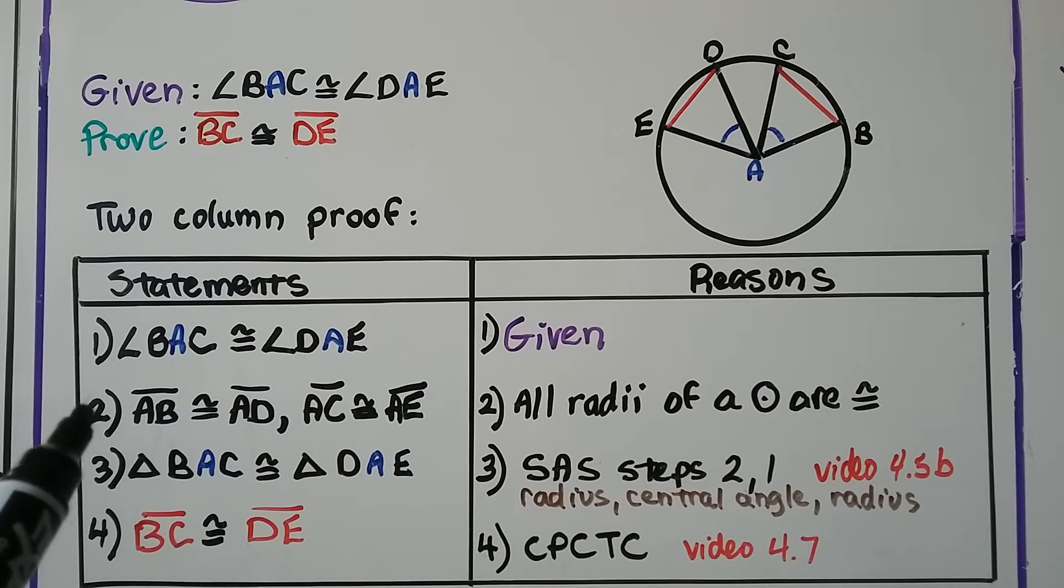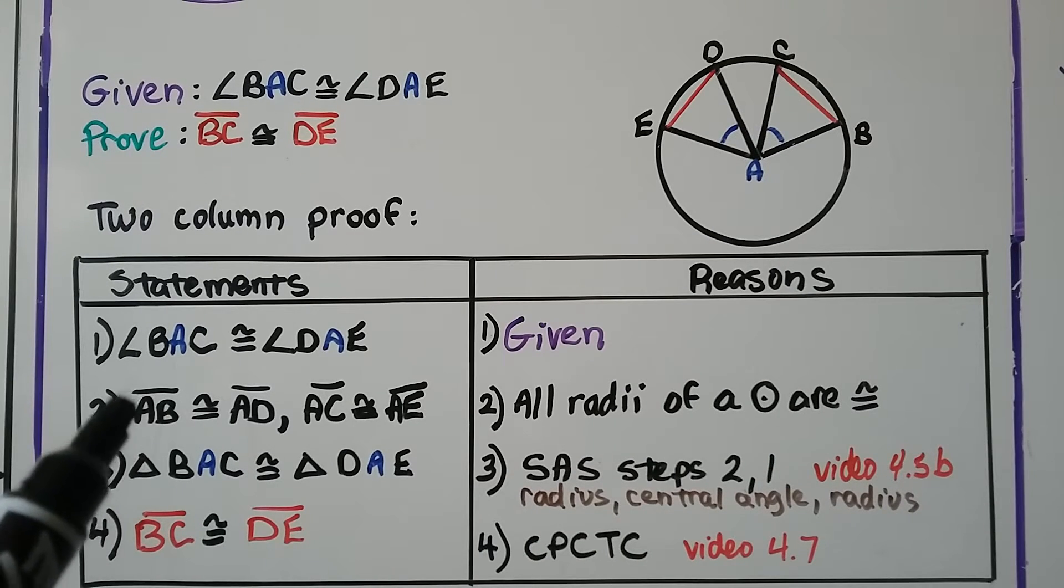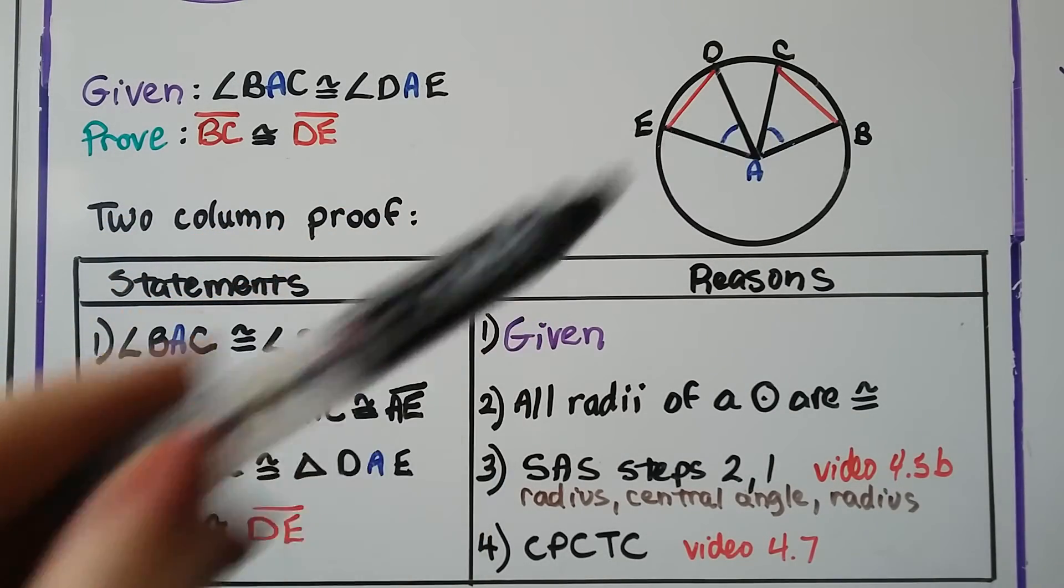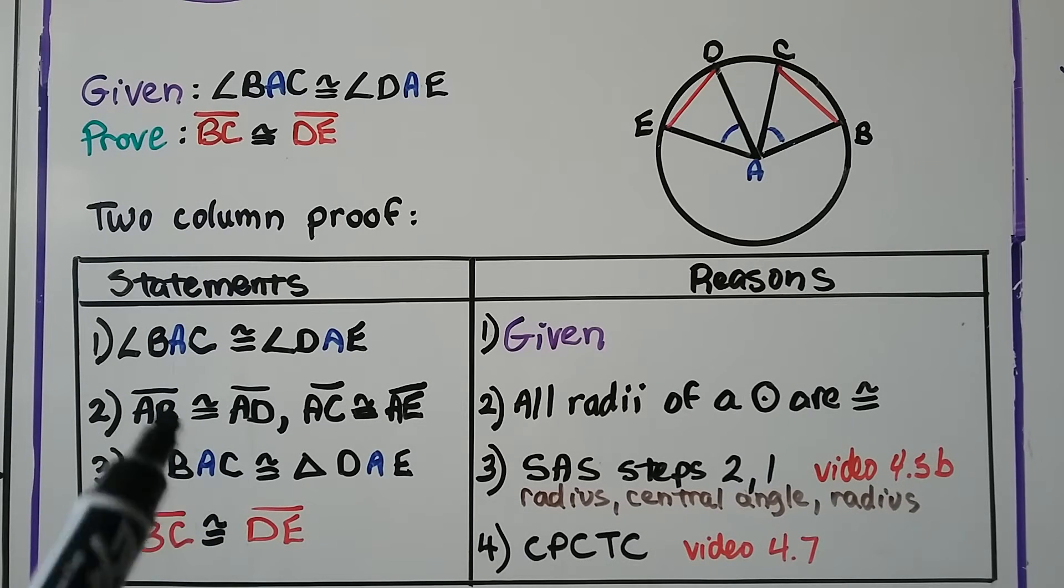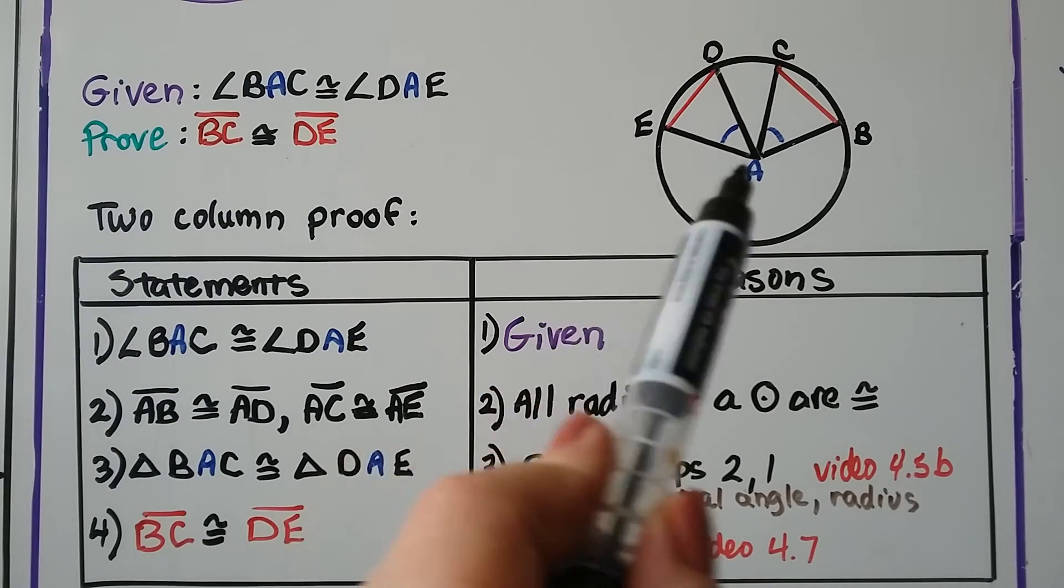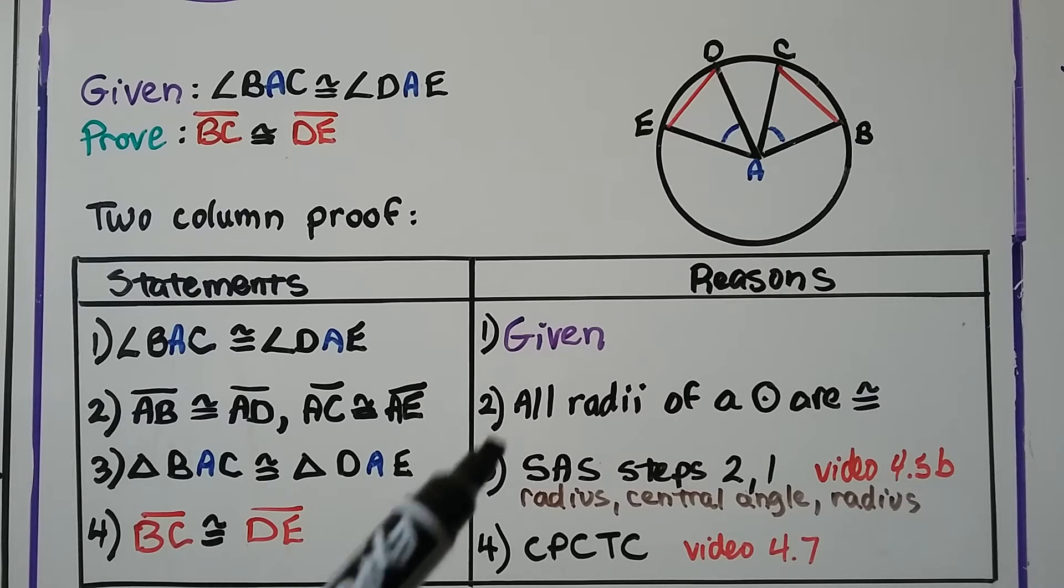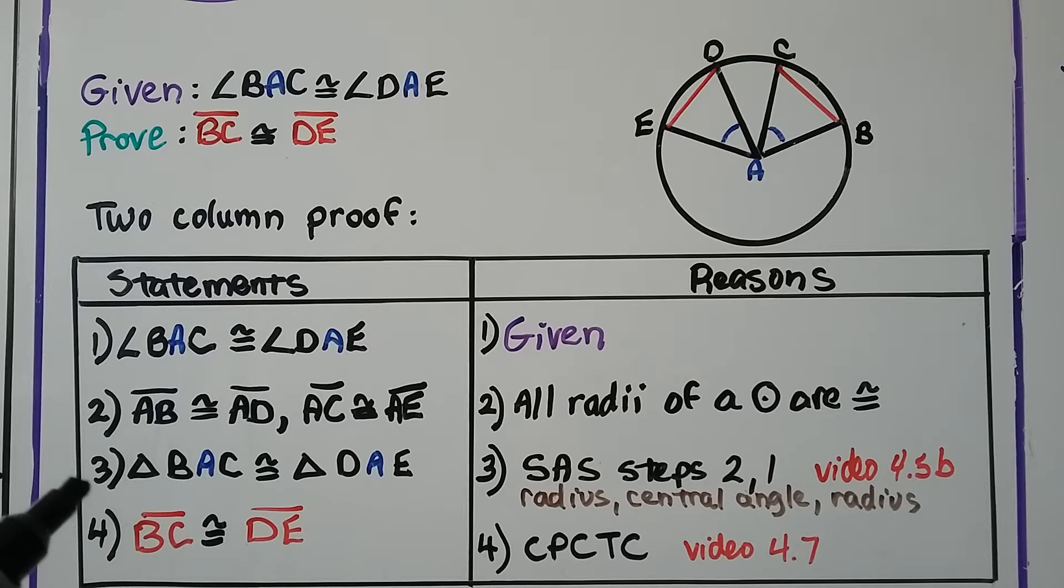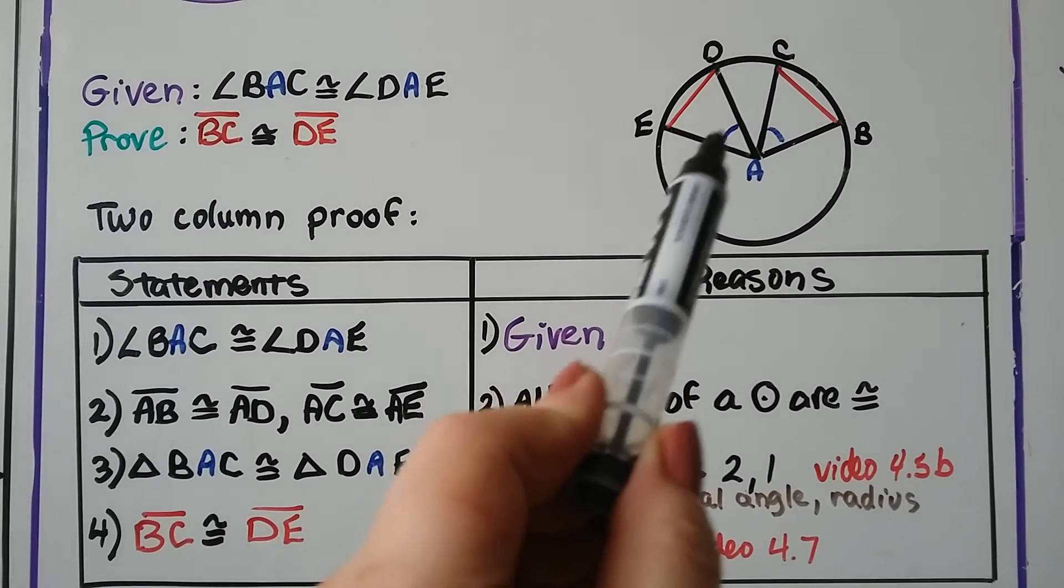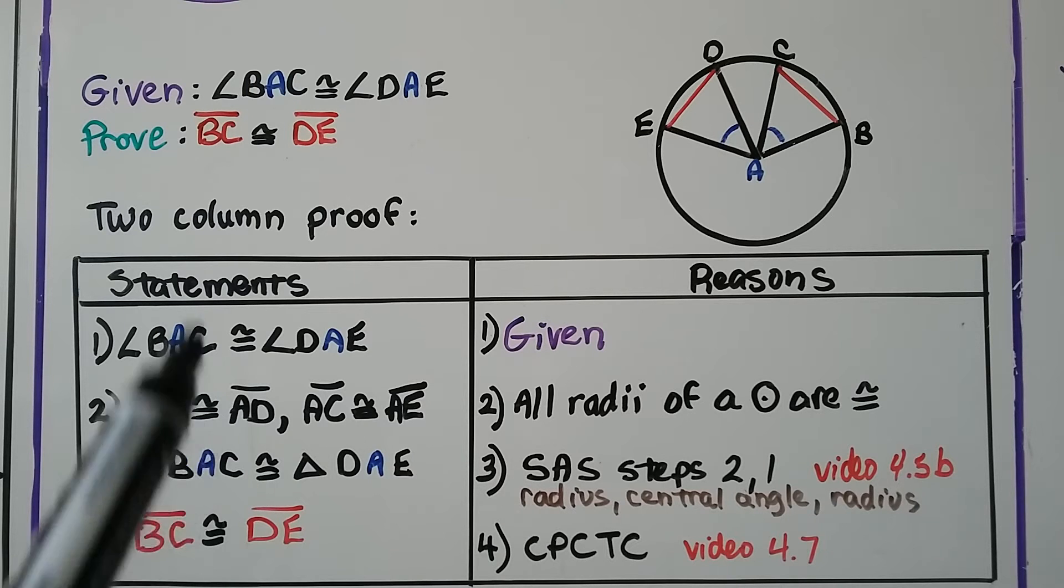Number two, is that segment AB, right here, this radius, is congruent to segment AD, this radius, because they correspond to each other as far as these two triangles are concerned. Segment AC, this radius, is congruent to segment AE, this radius. Our reason, all radii of a circle are congruent. Statement three is triangle BAC, this triangle here, is congruent to triangle DAE, this triangle here. And our reason is SAS, side angle side, for steps two and one.